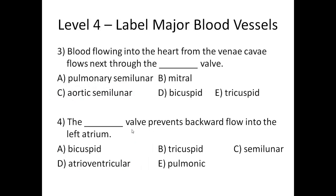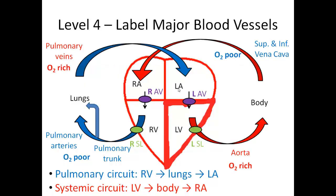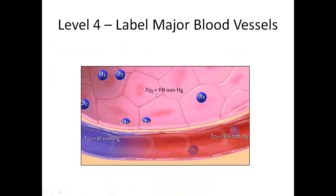Let's do two more questions. Blood flowing into the heart from the vena cavae flows next through what valve? So blood is flowing into the heart via the vena cavae — what is it going to go through next? Looking at the choices, we see a bunch of valves. We need to find the first valve we're going to hit. Go back to your diagram — here's the vena cavae coming back in. We didn't hit a valve when we came in; remember, when you enter, you don't hit a valve. But the next valve we're going to hit is the right AV.